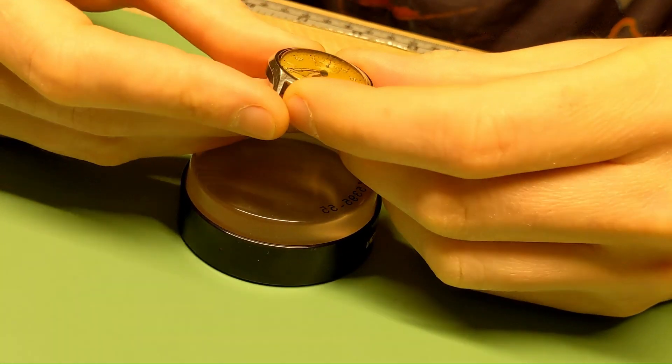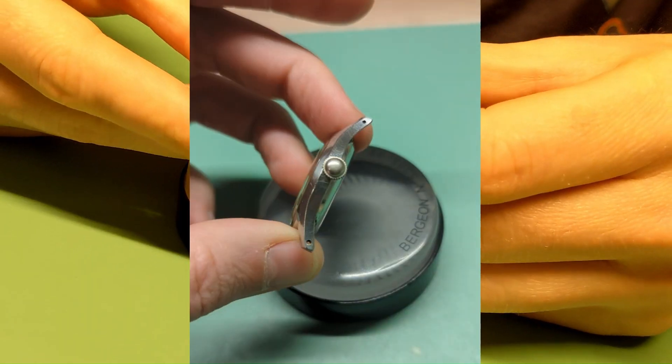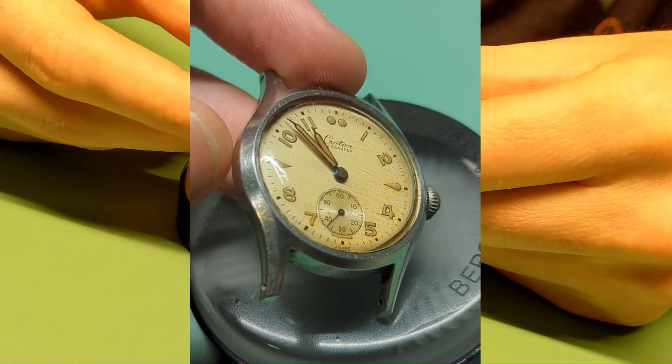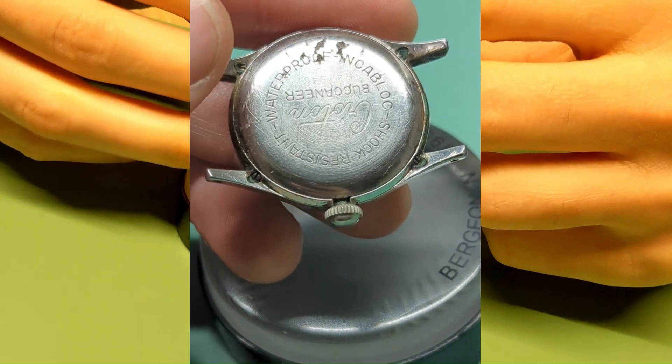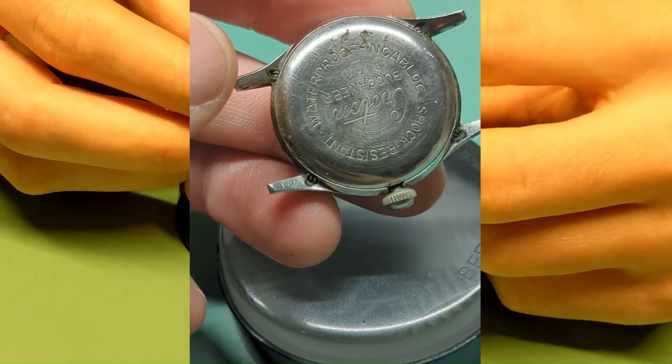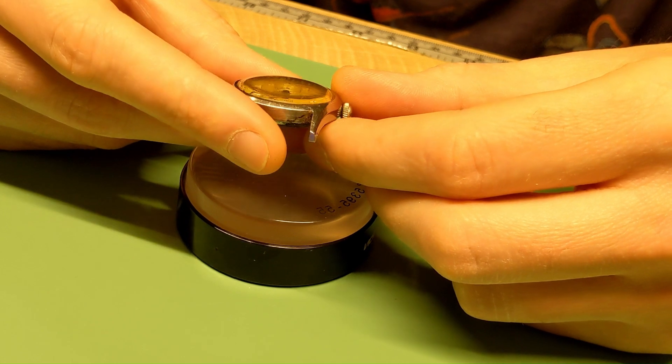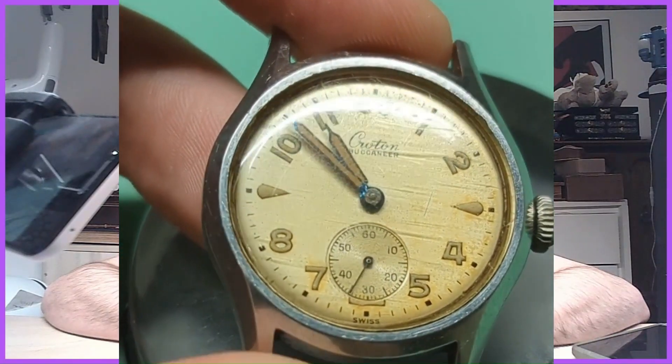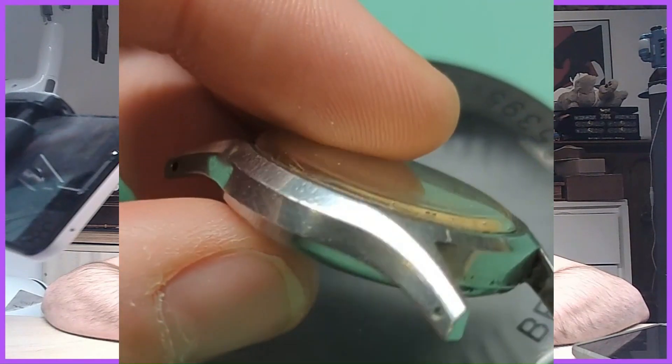As you can see, this watch case is very dirty. The crystal is pretty scratched up, so we're going to polish that crystal up, ultrasonically clean the case, and of course service the movement. I'm not going to do much to the dial. I don't like doing stuff to dials if I can help it.